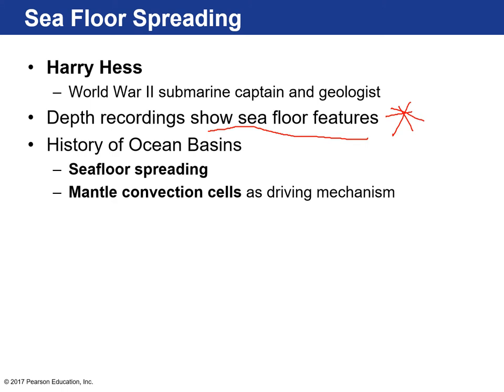He collected depth recordings showing the seafloor features, and they found a lot of really interesting things. Up until this point, we knew more about the surface of the moon than we did about the seafloor. Once we had the technology to map the ocean floor, we found mountain ranges, valleys, and volcanic features — not just a flat nothingness. This discovery — understanding that the seafloor actually moves — helped uncover the history and birth of ocean basins. The real driving mechanism that explains the motion of tectonic plates is movement in the mantle.